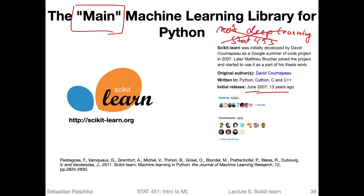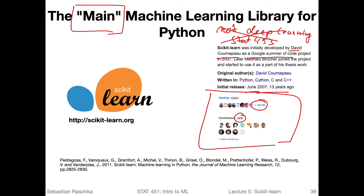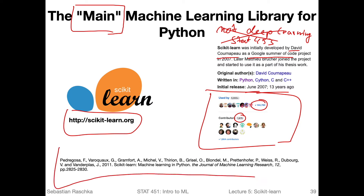A lot of people are contributing to it. Originally it started as a Google Summer of Code project by David Cournapeau, and later on other contributors joined. There are now more than 1,875 contributors on GitHub, and it's used by almost 150,000 people. Here's the link to the official website where you find the documentation and tutorials. And this is the main paper to cite if you use the library in your research project — it's a common convention in academia to cite software libraries people put a lot of work into.